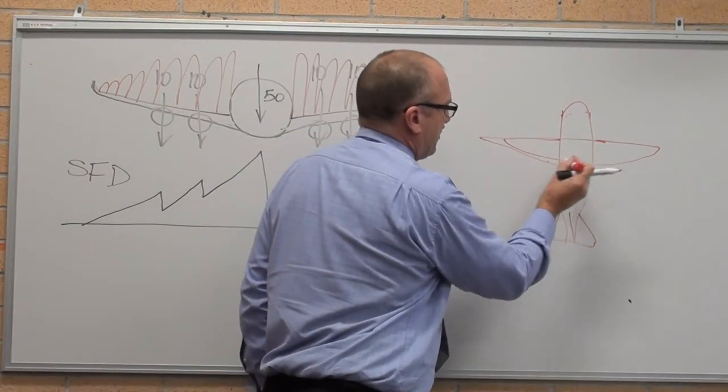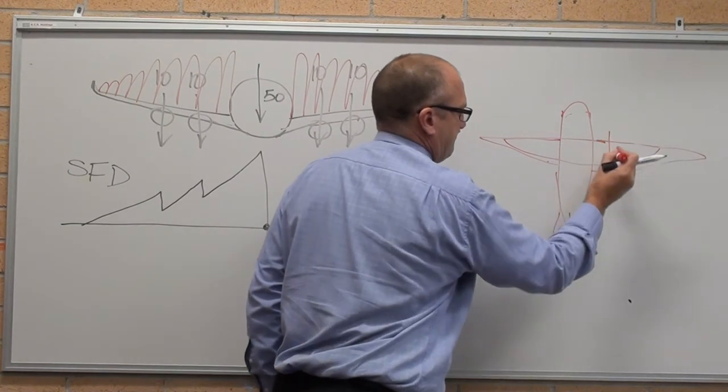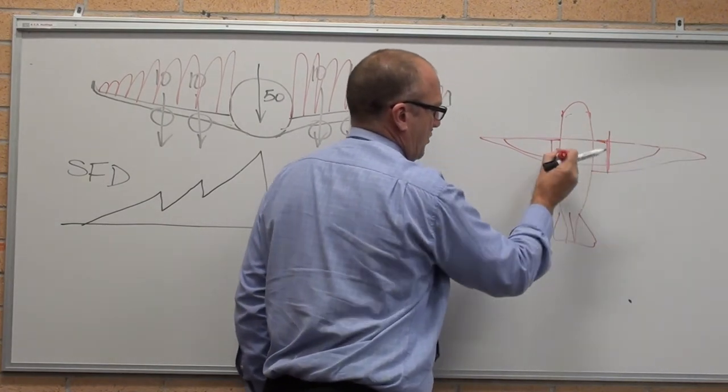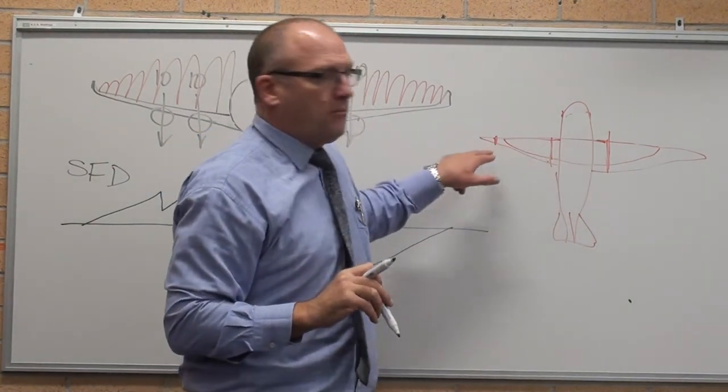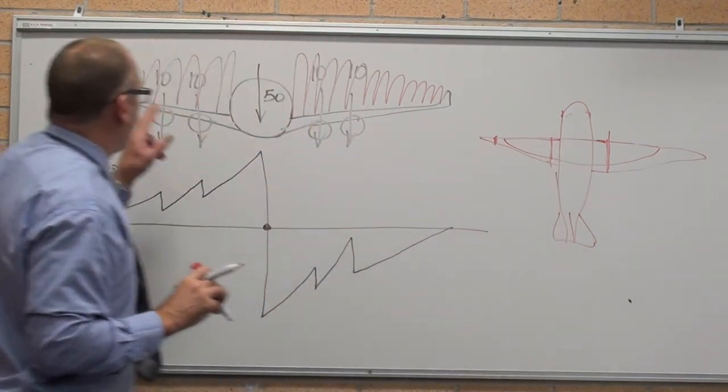The wings are thicker at the base than they are at the tip, which means that produces a lot more lift than at the tip, which is what I've drawn here.